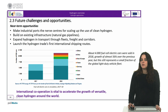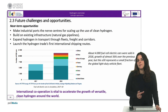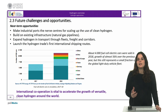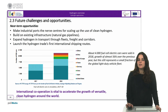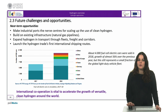The figure shows the increase in fuel cell electric cars in 2018 compared to the previous year. This growth is a positive sign, even though it still represents a small fraction of the global light-duty vehicle fleet. Finally, the last near-term opportunity is to integrate the lessons learned from the successful growth of liquefied natural gas in order to launch Hydrogen trade's first international shipping routes. What is clear is that international cooperation is vital to accelerate the growth of versatile clean Hydrogen around the world.